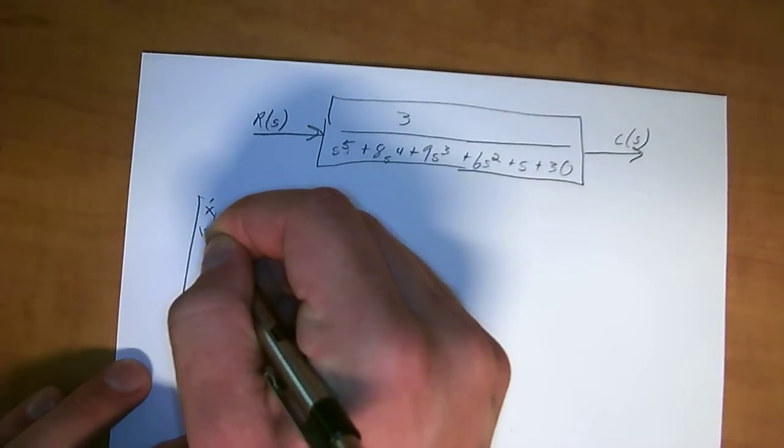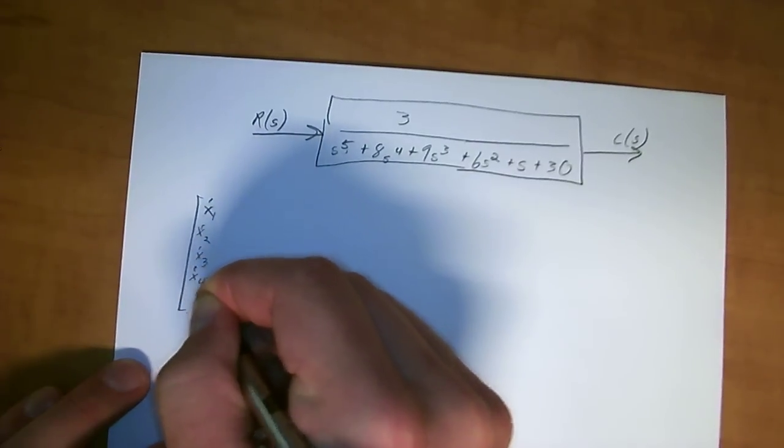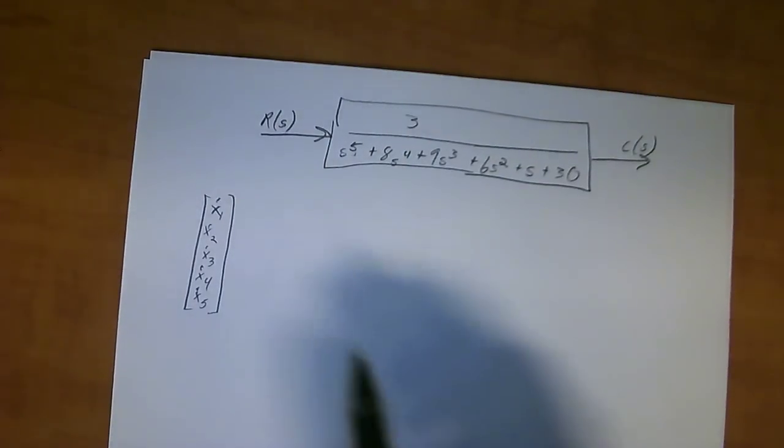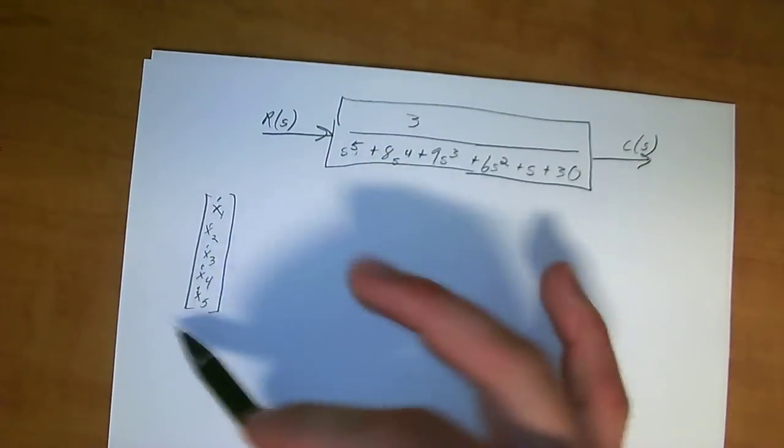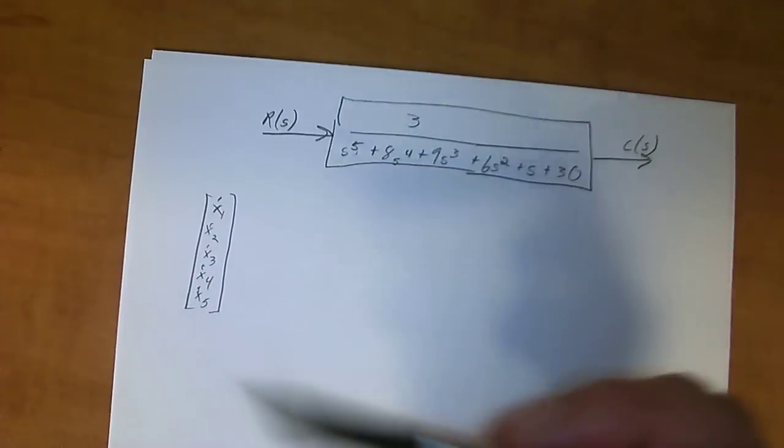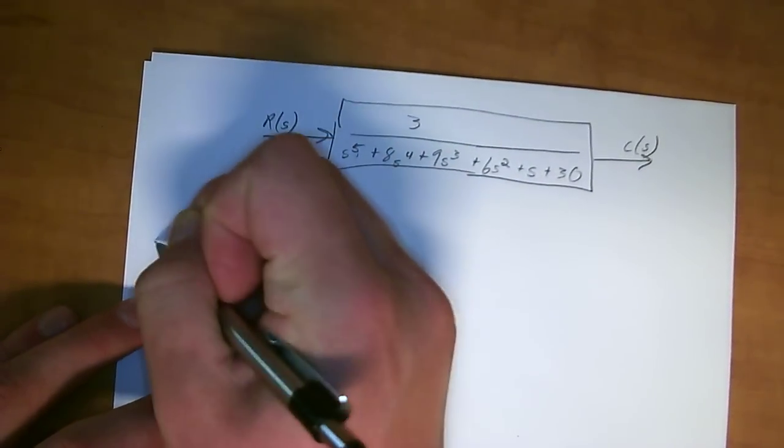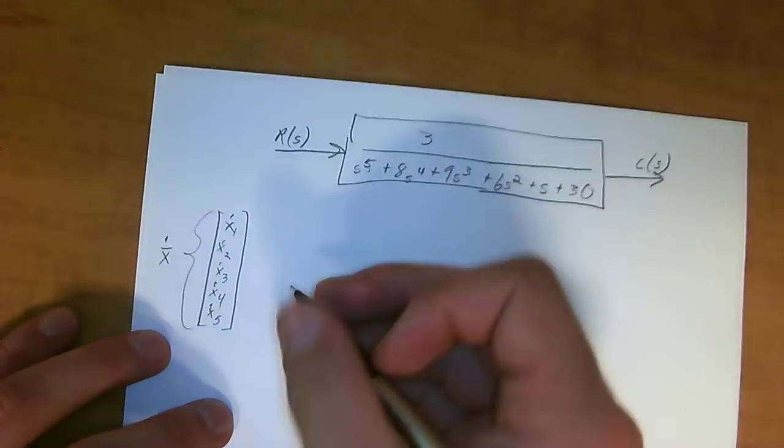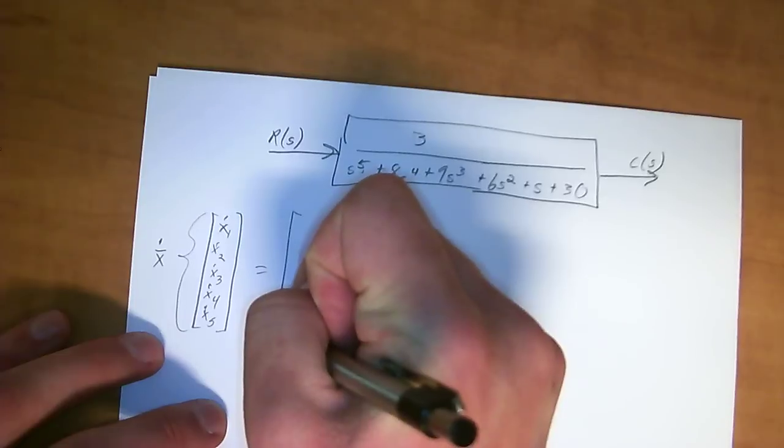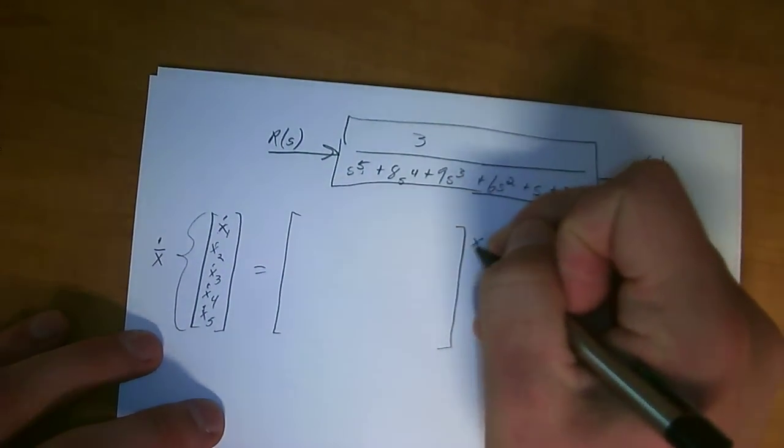So we have x dot 1, x dot 2, x dot 3, x dot 4, x dot 5. Now this is a shortcut method. If you don't know what these x dots are or where they come from, watch a different video to see the derivation of this kind of layout. This is also sometimes abbreviated as x bar dot, a vector of x dot.